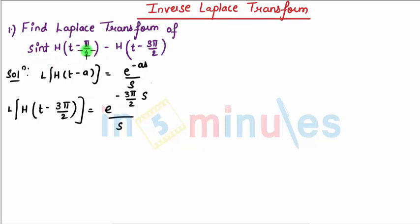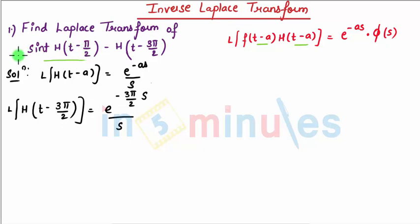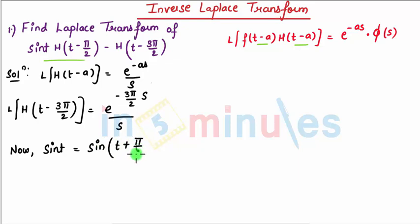Now we need to find the Laplace of sin(t) * h(t - π/2). The standard result is: Laplace of f(t - a) * h(t - a) = e^(-as) * Φ(s). The condition is that the shift in t must match in both the function and the step. Here, h has a shift of (t - π/2) but sin(t) has no such shift, so we need to rewrite sin(t).